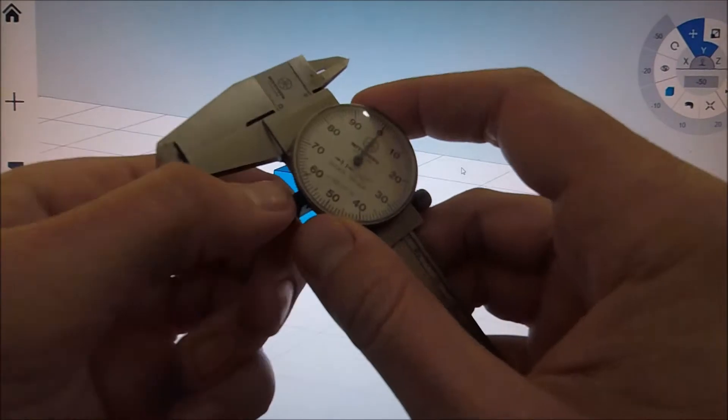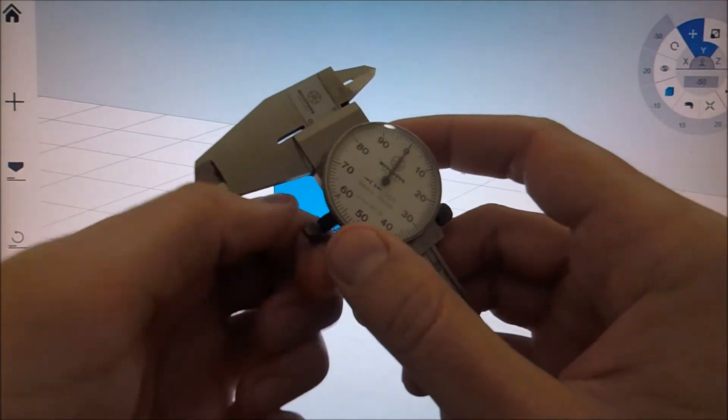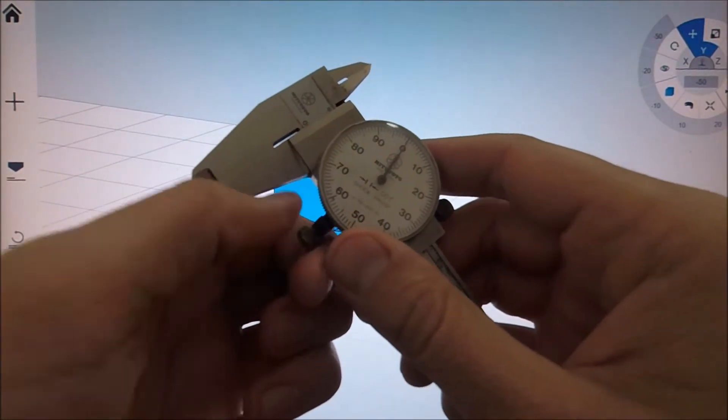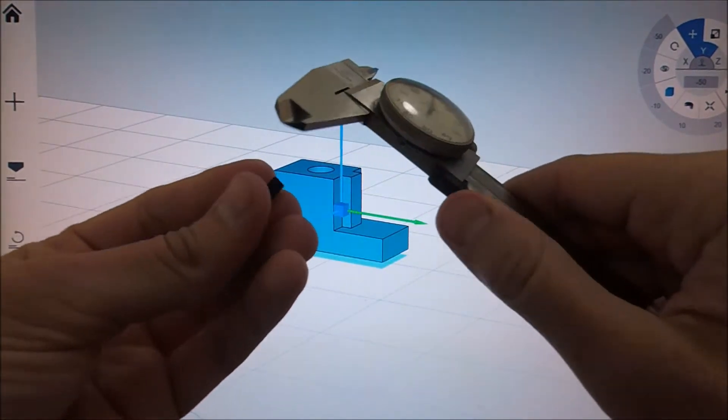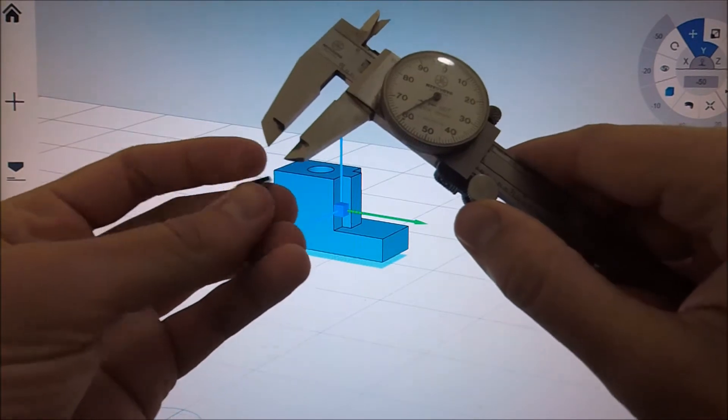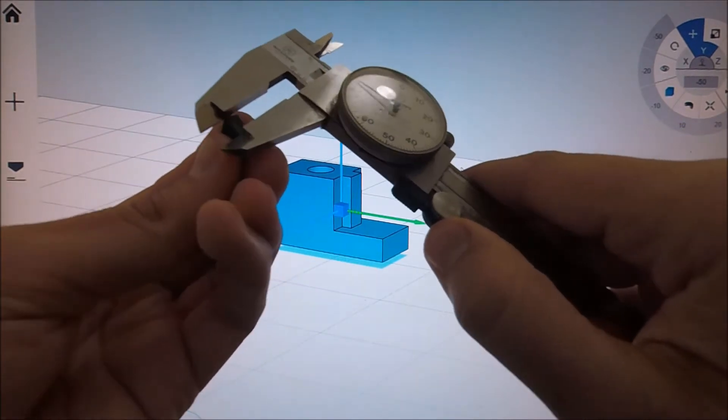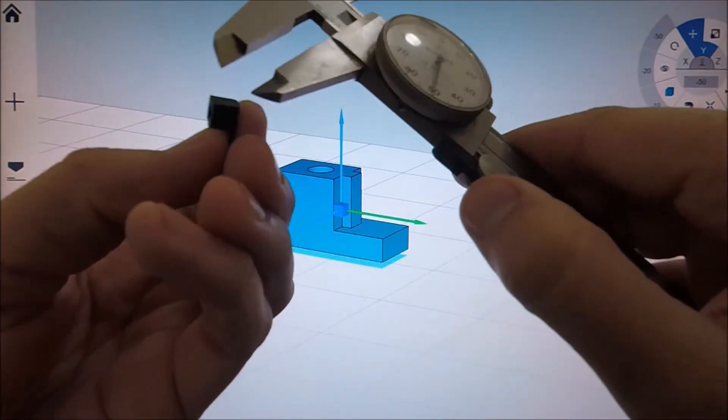So I figured what I would do would be model one up and print it on my 3D printer. And that's what I came up with. I measured using the dial calipers. And it has a slight taper on it, but I left the taper out for ease of printing.